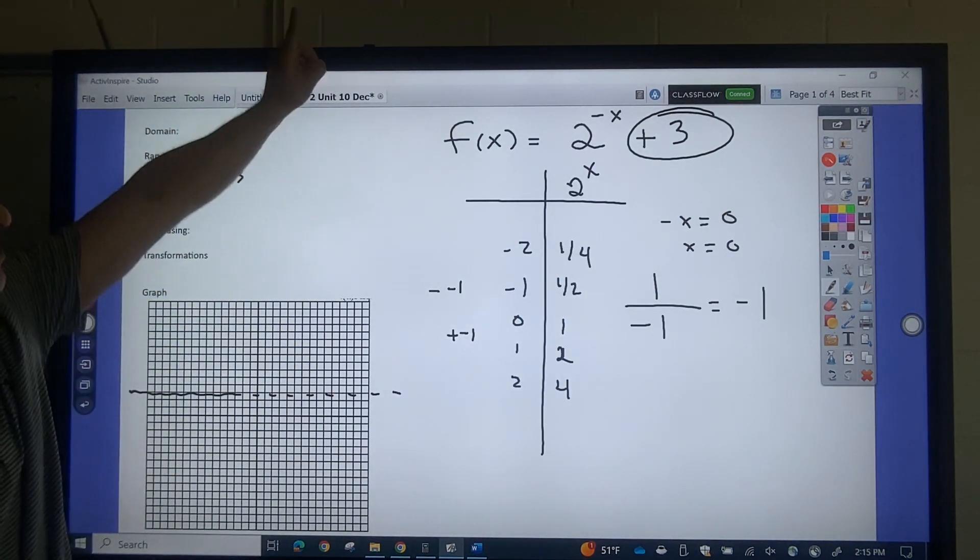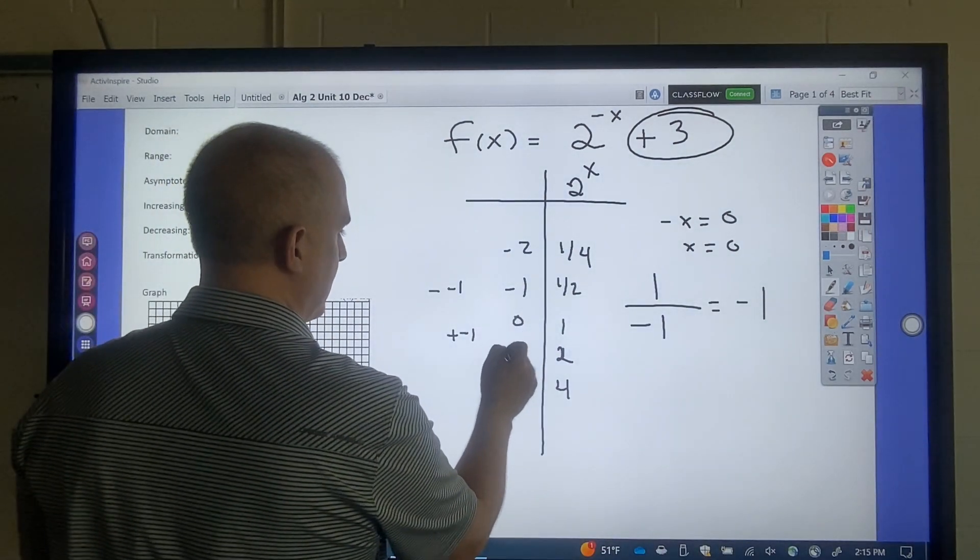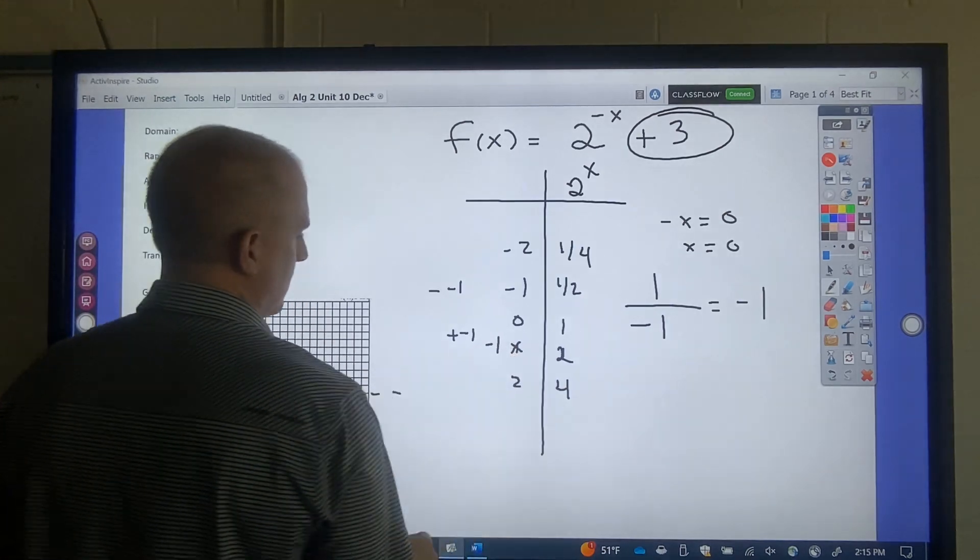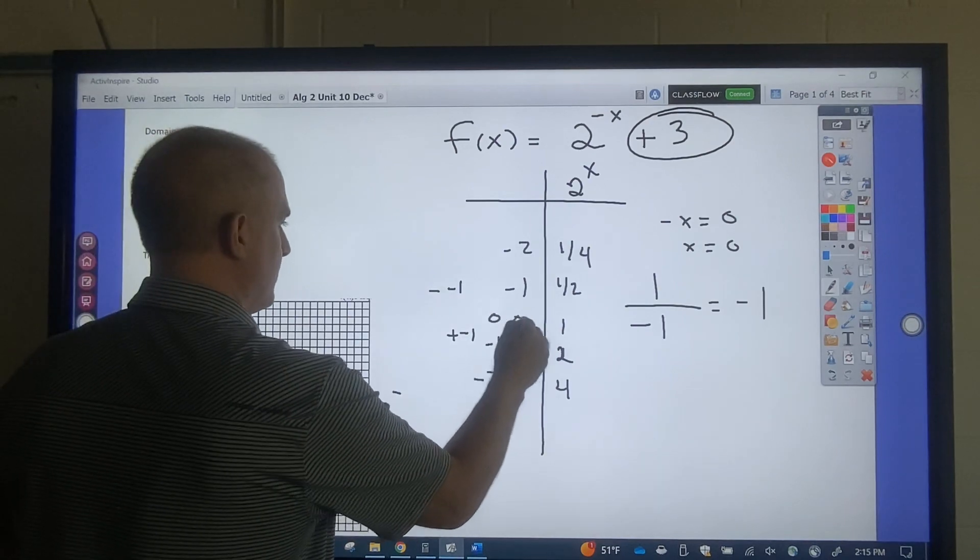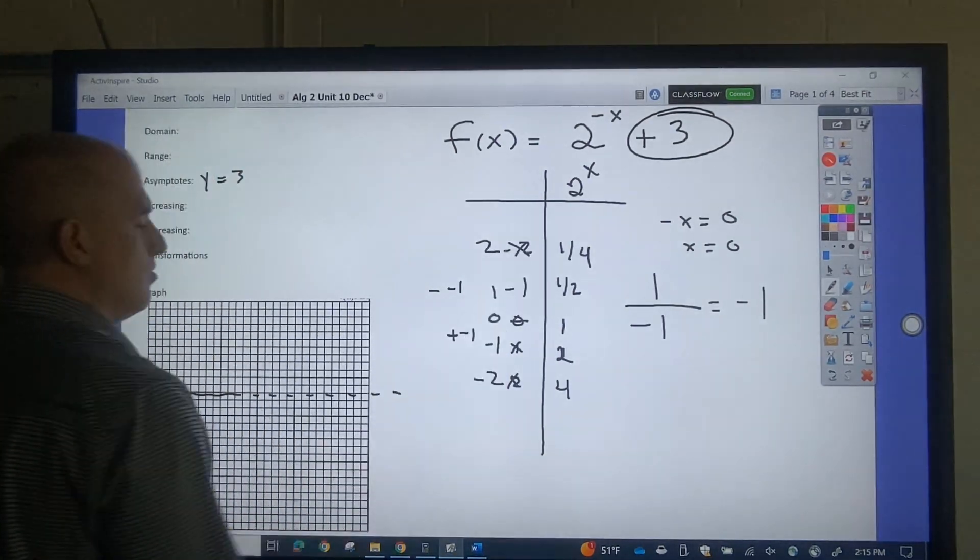So that's going to be negative 1. That's going to be negative 2. That's still going to be 0. That's going to be 1. That's going to be 2.